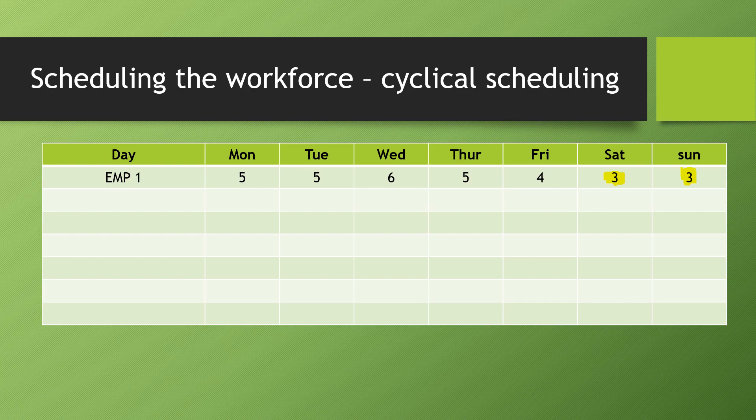For Doctor 1, we assign work on Monday through Friday. Since Saturday and Sunday have a demand of only three, Doctor 1 takes off on Saturday and Sunday. The demand for Monday 5, Tuesday 5, Wednesday 6, Thursday 5, and Friday 5 is met by Doctor 1. On Saturday and Sunday, Doctor 1 is off.